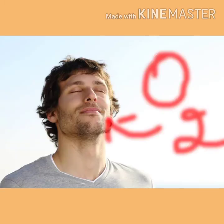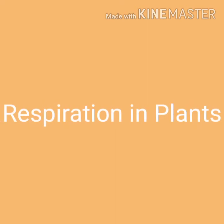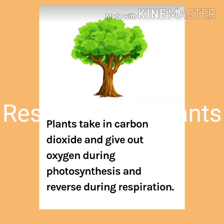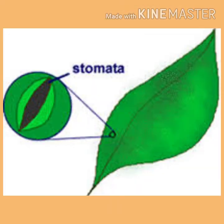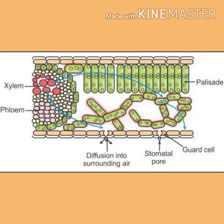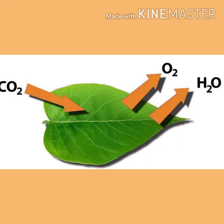Since the aerobic respiration pathway depends on oxygen, aerobic organisms need to ensure that there is sufficient intake of oxygen. In plants, exchange of gases takes place through stomata, and the large intercellular spaces ensure that all cells are in contact with the air. Carbon dioxide and oxygen are exchanged by diffusion here.